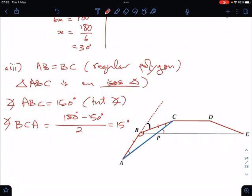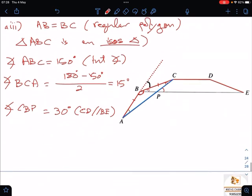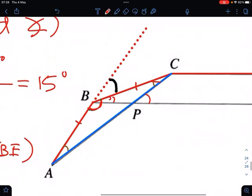Okay, and we know that angle CBP, this small one here, equals 30 degrees. Why? Because CD is parallel to BE for a regular polygon. Once we know that, we've found our exterior angle. This is the exterior angle that we want, equal to the sum of the 2 interior angles opposite.